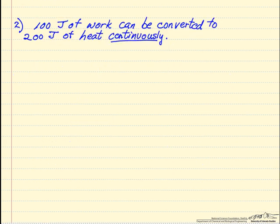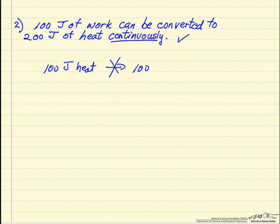The second misconception is this idea of converting heat and work. So 100 joules of work can be converted to 200 joules of heat continuously, and this is indeed true — this is possible. The reverse is not possible, so 100 joules of heat cannot be converted continuously to 100 joules of work. There is a large difference between heat and work: we cannot continuously convert heat completely to work.